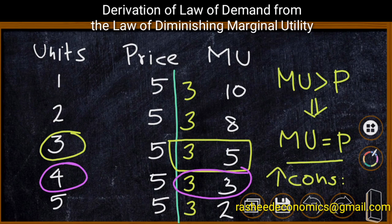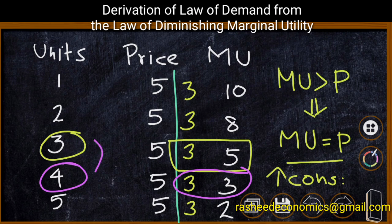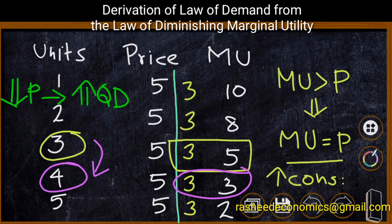When price of the commodity decreased, the consumer is forced to increase consumption in order to maintain consumer equilibrium. The basic purpose of the consumer is to have maximum satisfaction, and in order to have maximum satisfaction he will equate price with marginal utility. Such a point can be identified at the 4th unit of consumption. It means the consumer is increasing his consumption from 3 to 4 due to a decrease in price. Therefore, a decrease in price of a commodity leads to an increase in quantity demanded — this is the law of demand, achieved through the law of diminishing marginal utility.